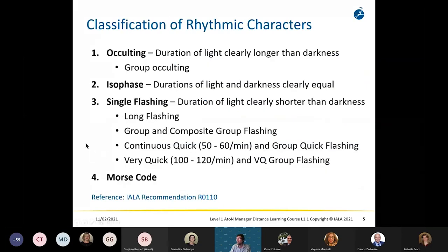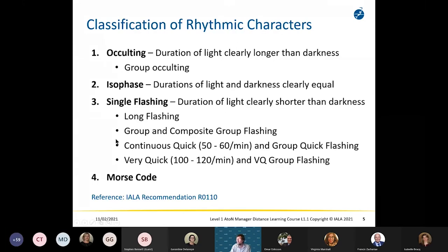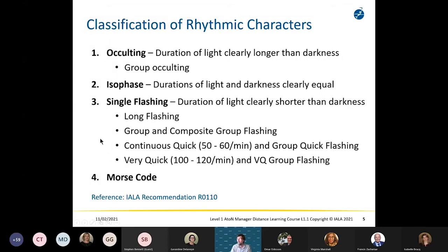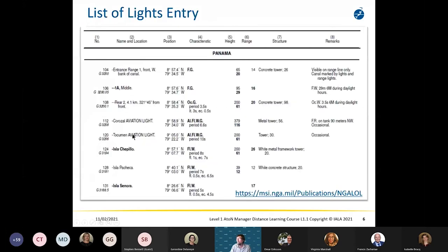There are essentially only four character classifications. You can have an occulting character where the light period is longer than the eclipse; an isophase character where light and dark are equal, such as isophase 4 — two seconds on, two seconds off; a flashing light, which includes single flashing, long flashing, group and composite flashing, continuous quick, and very quick; and a morse code light, which is used very sparingly. Morse A is generally used for safe water marks.